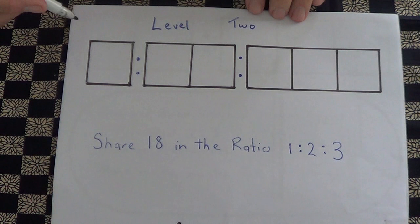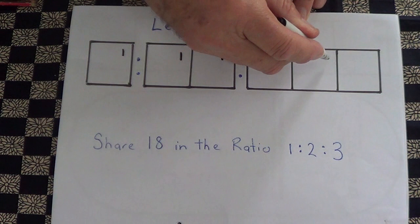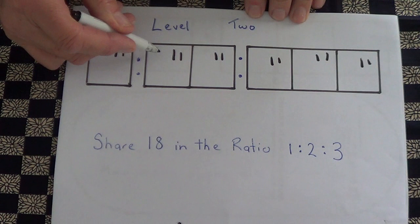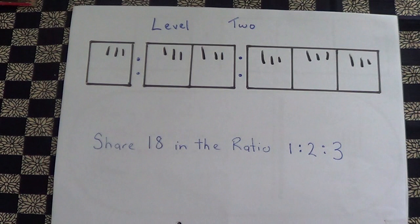I count them out: 1, 2, 3, 4, 5, 6, 7, 8, 9, 10, 11, 12, 13, 14, 15, 16, 17, 18. There's three in each box.